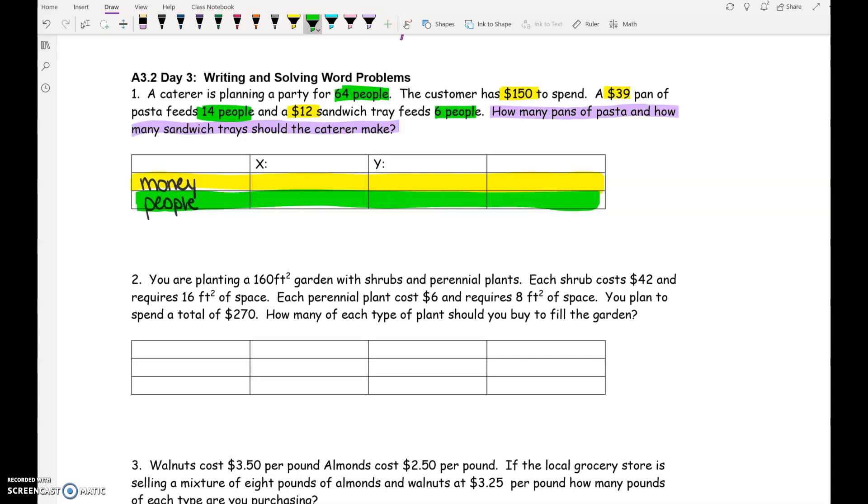So our other one is going to be people. Our two equations are going to come from money and people. Now, within money and people, there's two specific things that they're talking about. They are talking about trays of pasta, or pans of pasta. And the other thing they are talking about is sandwich trays.